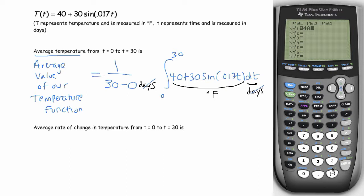So we'll evaluate this integral with our calculator. Go into Y1. Type in 40 plus 30 sine of 0.017t, or x. Make sure you're in radian mode. Then go to the quit screen and hit math. Go down to 9, which is fnint.